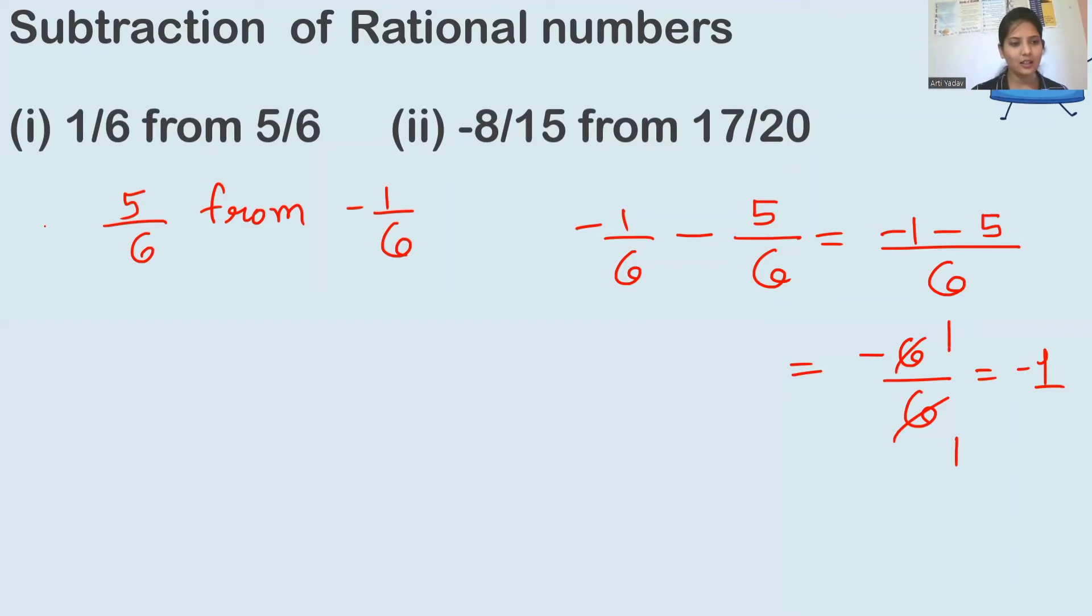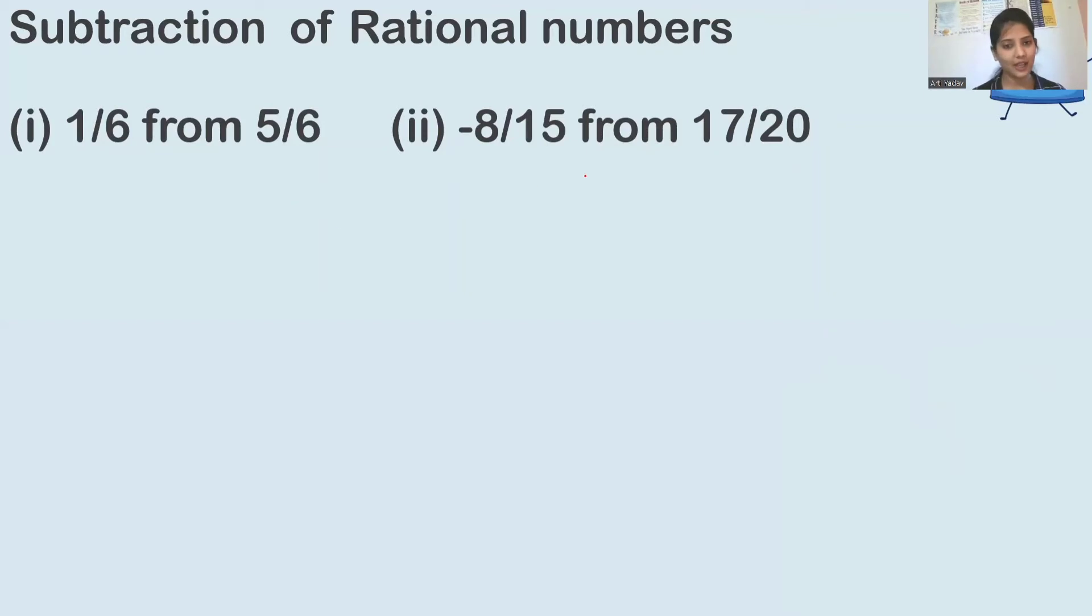This was a different example. Now the second question - what is the difference in question 1 and 2? In question 1 the denominators were same, but here the denominators are not same. Minus 8 upon 15 from 17 upon 20. You have to subtract minus 8 upon 15 from 17 upon 20.